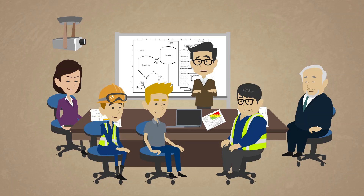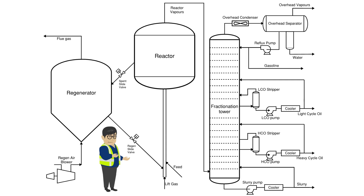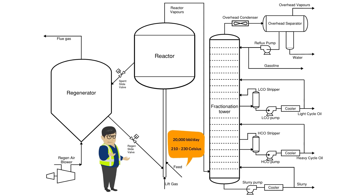Before we jump into the PHA worksheet, let's walk through the drawings and get some process parameters starting at the inlet. The feed to the unit is vacuum gas oil with a flow rate into the reactor controlled to around 20,000 barrels per day.